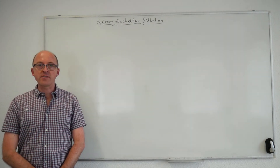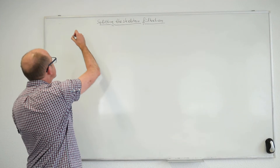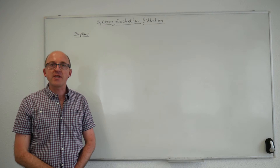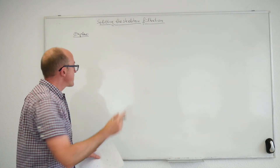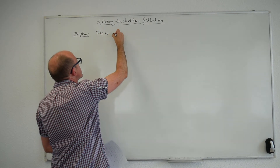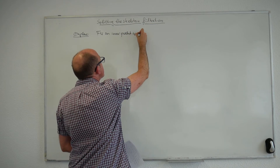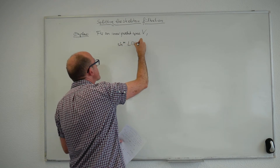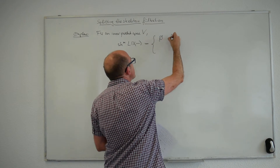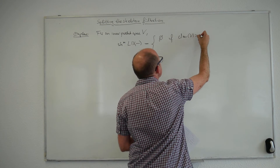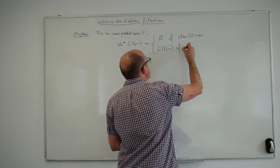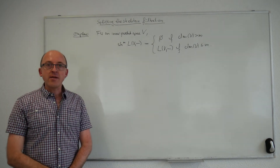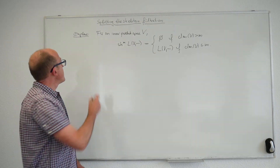Let me discuss two examples of the skeleton filtration. For representable orthogonal spaces: the m-skeleton of the represented space L(V, −) is either empty if dim(V) > m, or all of the represented space if dim(V) ≤ m. More interestingly, we need the skeleton filtration of the orthogonal space O modeling the infinite orthogonal group.